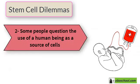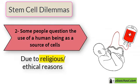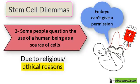Moreover, some people question the use of a human being as a potential source of cells. Some of those people do not accept this because of religious reasons, and others believe that it is a violation of human rights since the embryo cannot give permission.